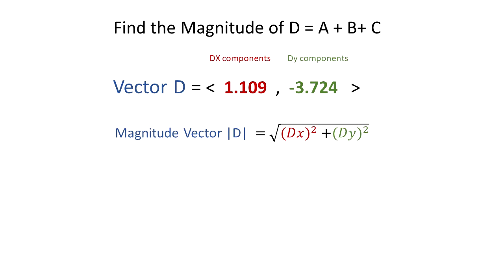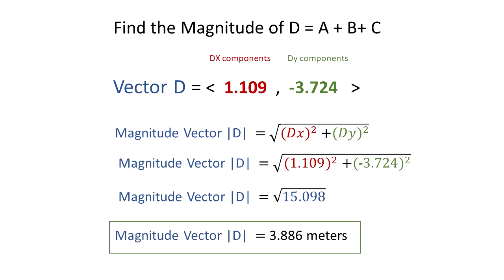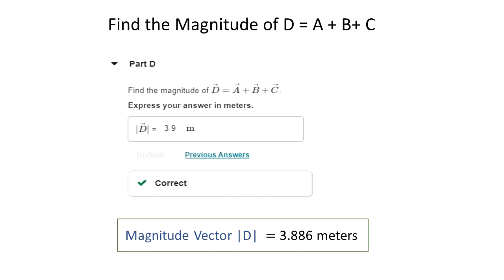This comes from the Pythagorean theorem. So the square root of 1.109 squared plus negative 3.724 squared—but the negative doesn't matter because that number is squared. We get that the square root of 15.098 equals 3.886 meters. They only ask for one decimal place, so we round to 3.9 meters.